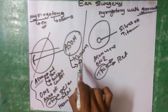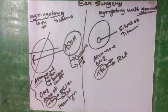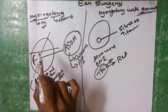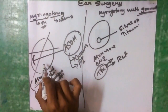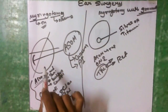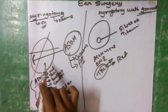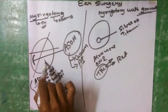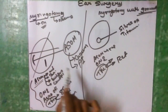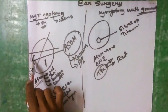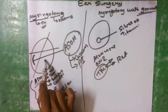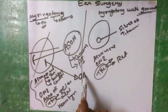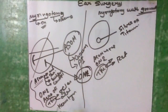For ASOM the incision site is the posterior inferior part. If the disease is otitis media with effusion (OME), then a radial incision is performed, and the site could be either the posterior inferior or the anteroinferior quadrant.